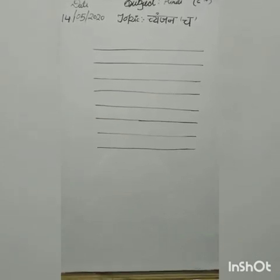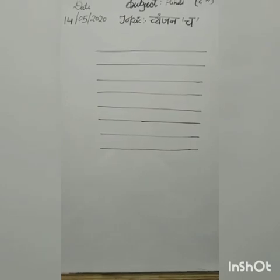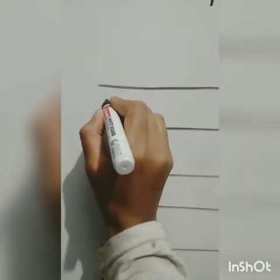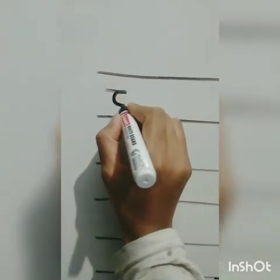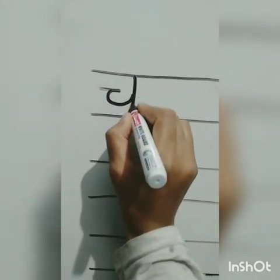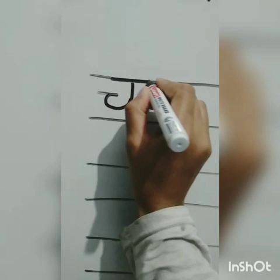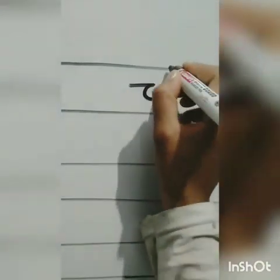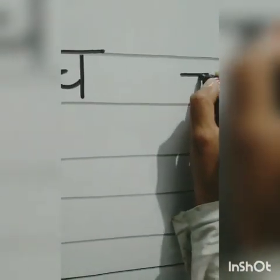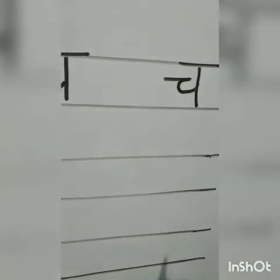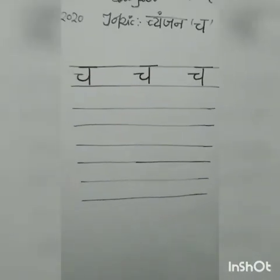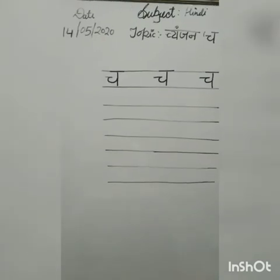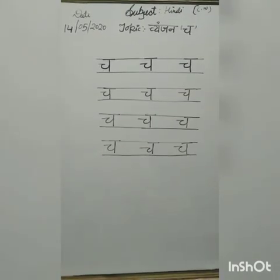Then you have to start from the first line. I will tell you how we will write. First you have to draw a sleeping line, then a curve, and a standing line, then a sleeping line. You have to write like this.